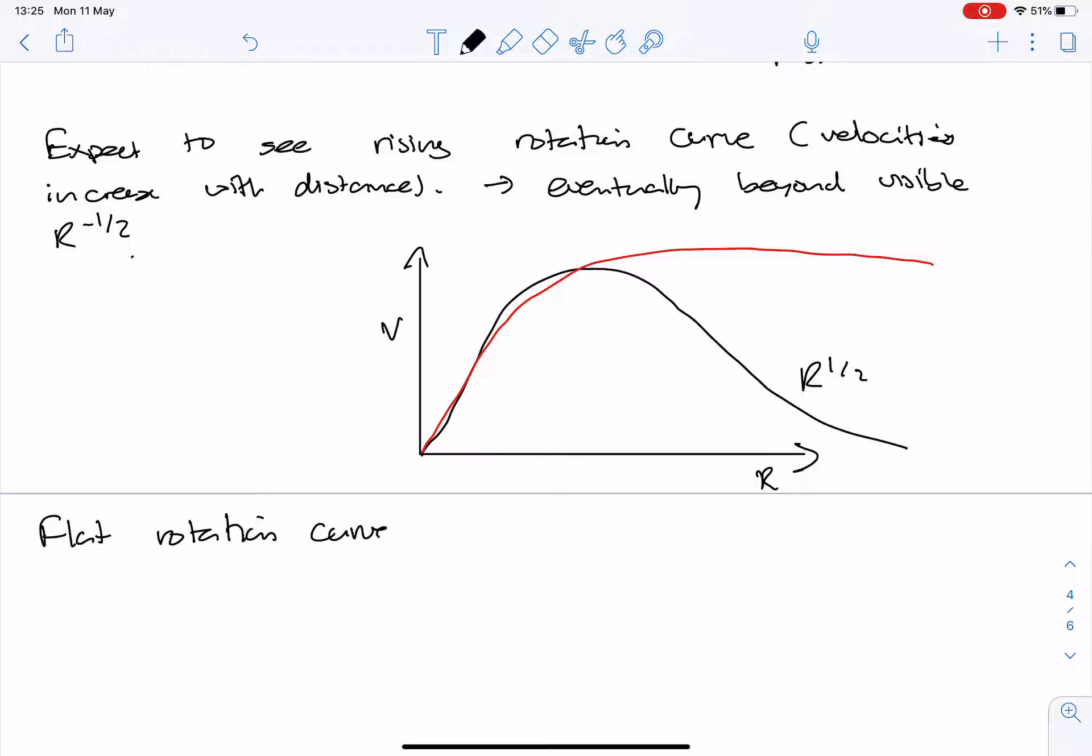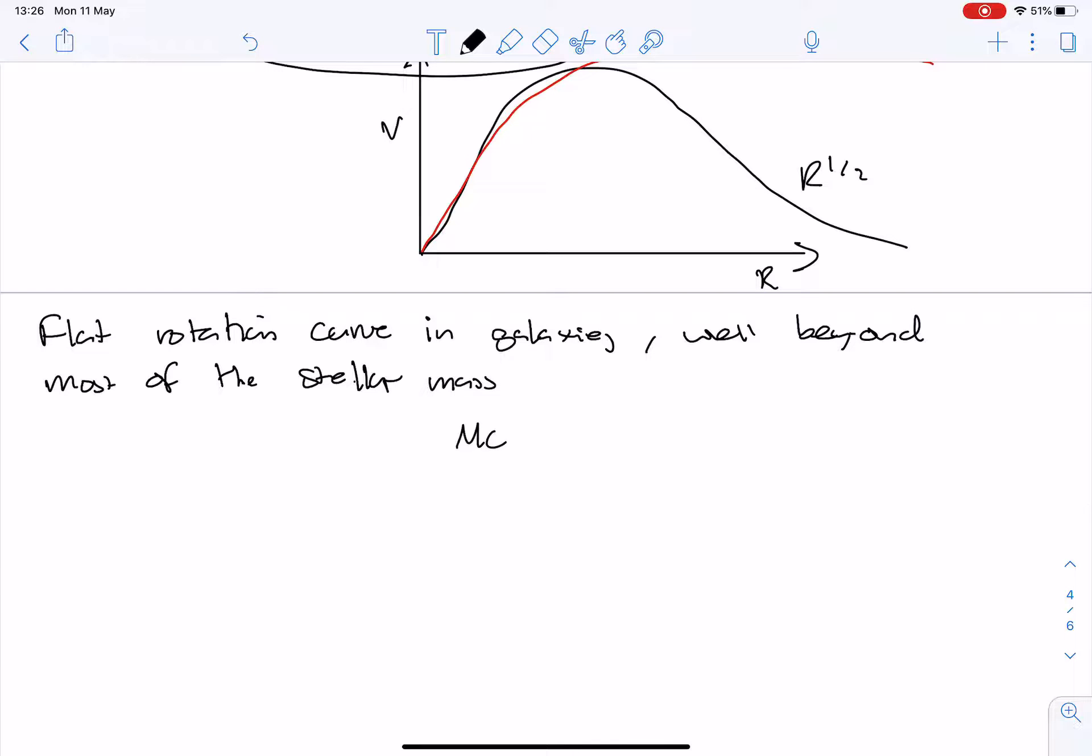This is a known problem called the flat rotation curves in galaxies. And the thing is here, the galaxy, and if you look in the PDF there is an image for this, the galaxies here are sort of something like this sort of size. They don't have a defined edge, of course. Galaxies have fluffy edges. But a galaxy is much smaller. You can measure individual stars or gas or something at a much larger radius than the bulk of the galaxy. So flat rotation curves in galaxies well beyond most of the stellar mass.